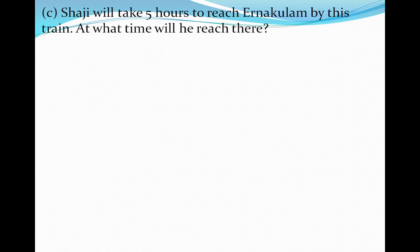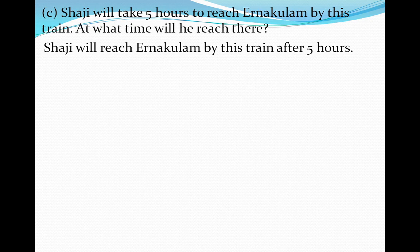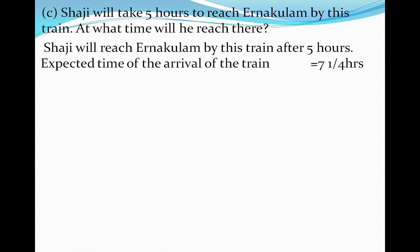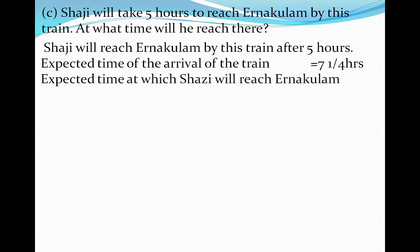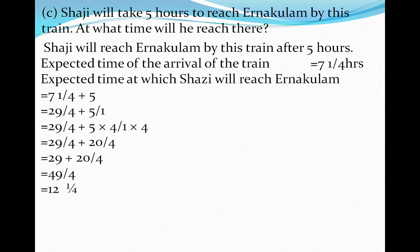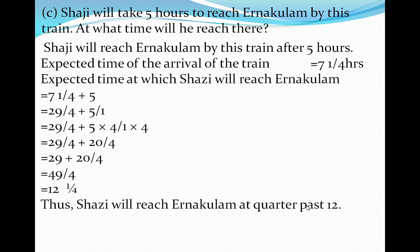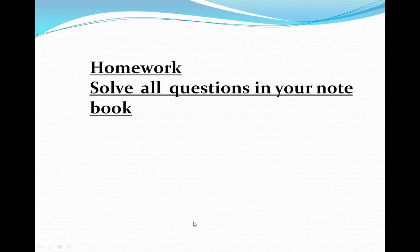Now look at how to reach Ernakulam. Shaji will take 5 hours to reach Ernakulam by this train. At what time will he reach there? The expected time of arrival of the train is 7 and 1/4 hours, so we have to do addition: 7 and 1/4 plus 5. By equalising the denominator we get the answer 12 and 1/4. So dear students, Shaji will reach Ernakulam at quarter past 12. You have to solve all the questions in your notebook as homework. We have finished our 4th topic — Parts and Wholes. If you have any queries and doubts, you can ask me in the comment box. Okay, till then have a good day.